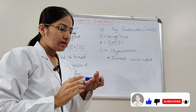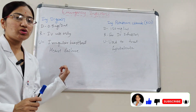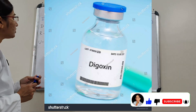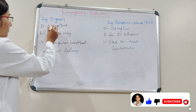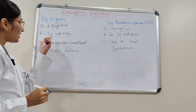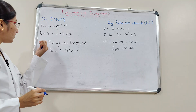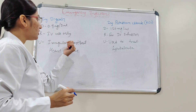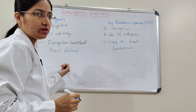The third injection is Digoxin. The dose is 0.5 mg per 2 ml, route is intravenous infusion. It is used for irregular heartbeat and also for heart failure.